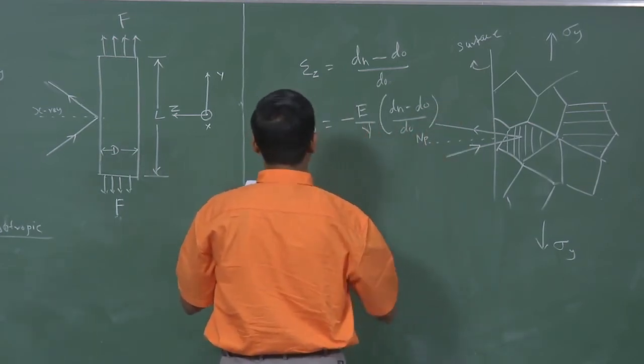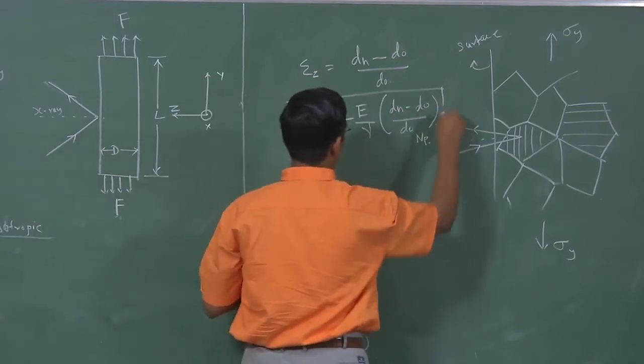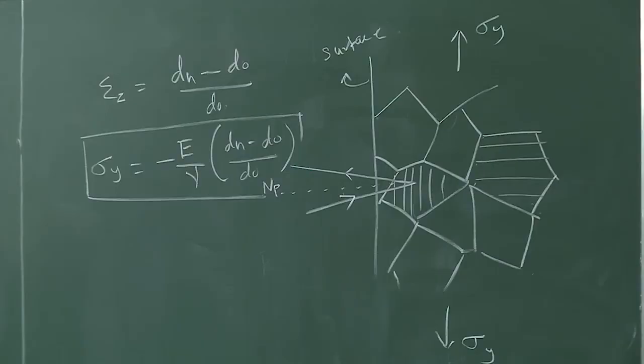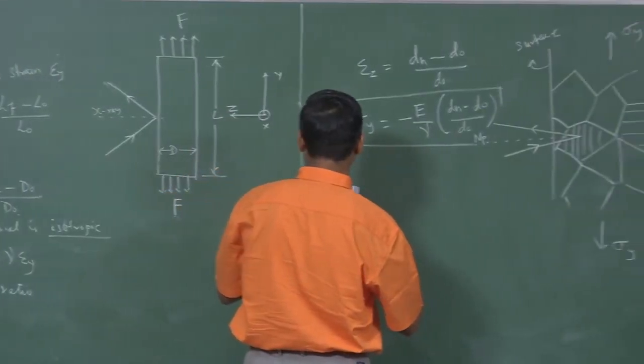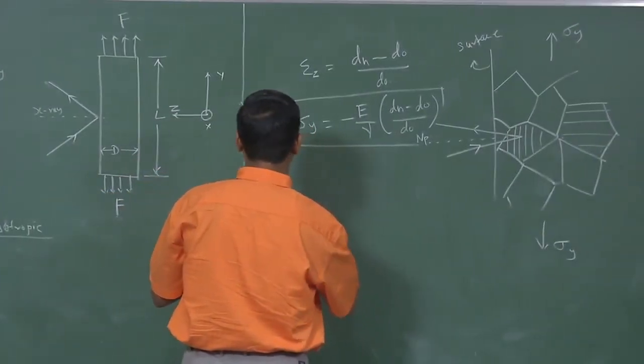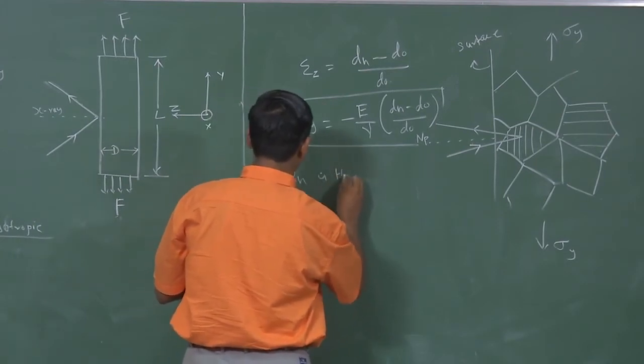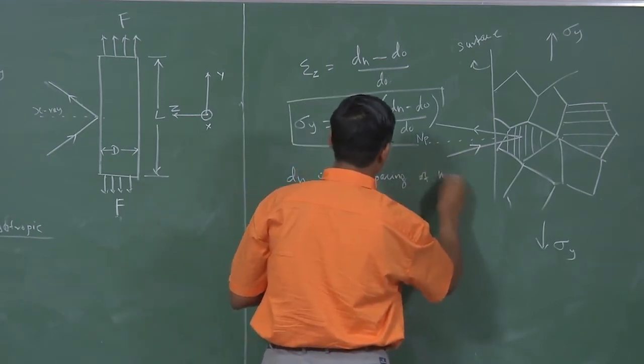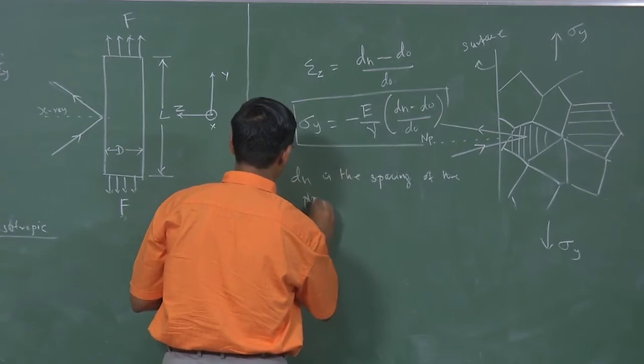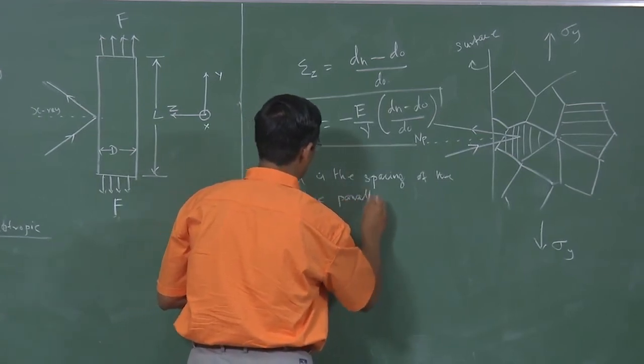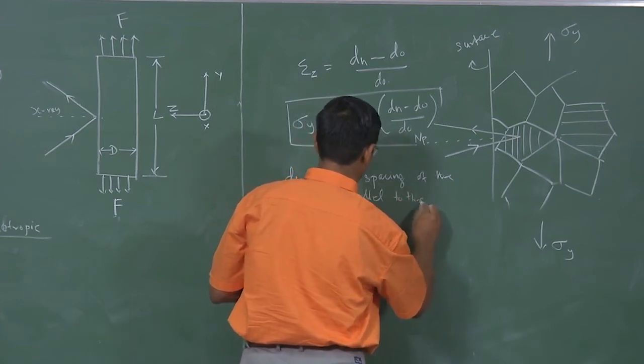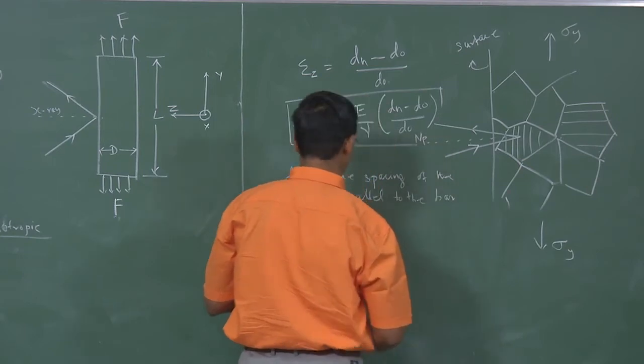This is the relation which forms the basis for using X-ray diffraction. You find the D spacing and I will write the details. Dn is the spacing of the plane parallel